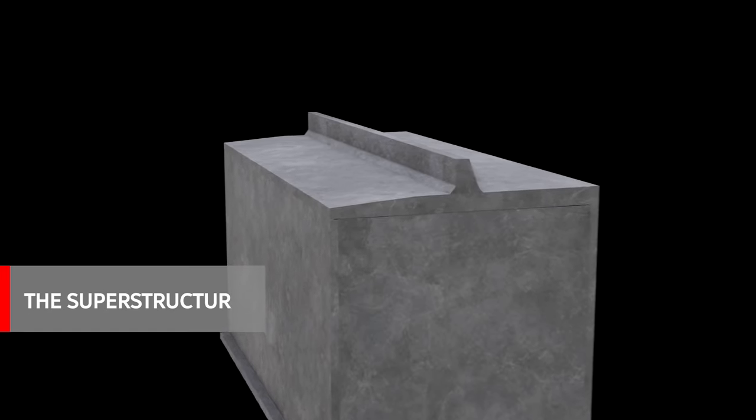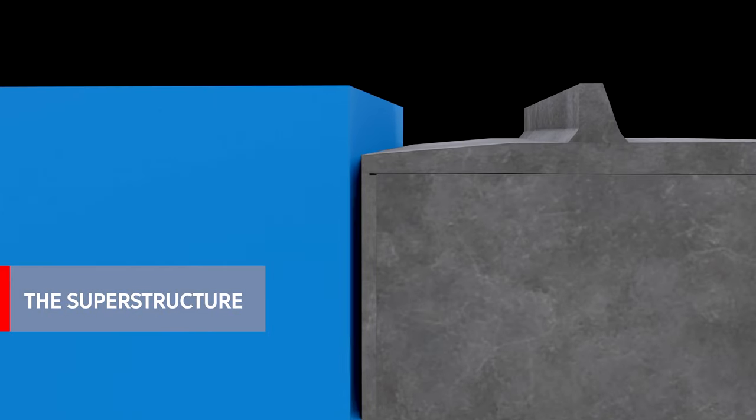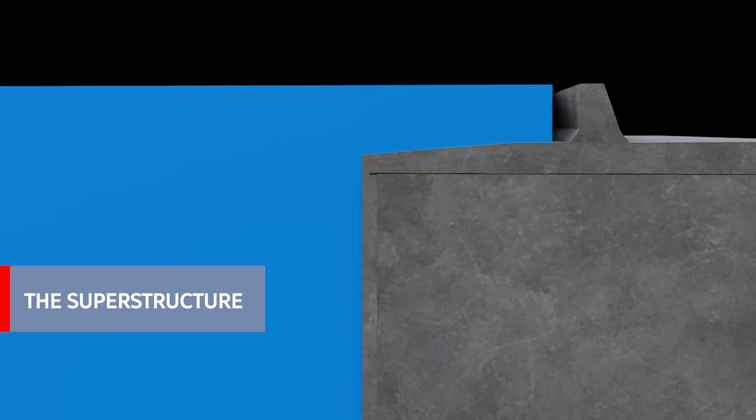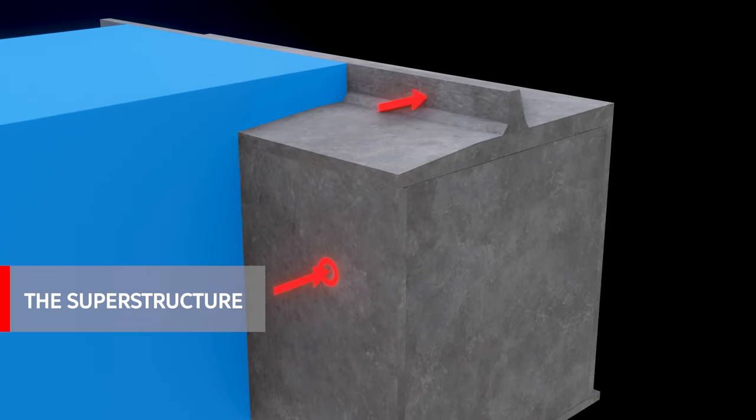The superstructure of the caisson is made with a crown wall that has AR profiles studied to reduce the combined effect of the superficial hitting waves and the underwater pressures.